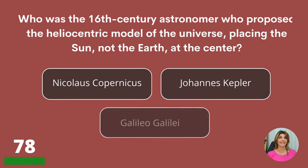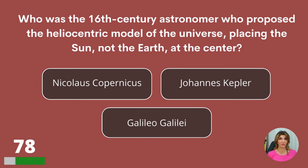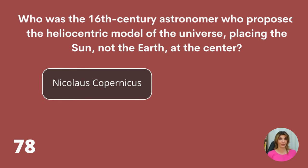Who was the 16th-century astronomer who proposed the heliocentric model of the universe, placing the Sun, not the Earth, at the center? Copernicus, Johannes Kepler, or Galileo? Copernicus.